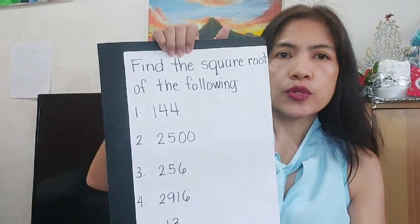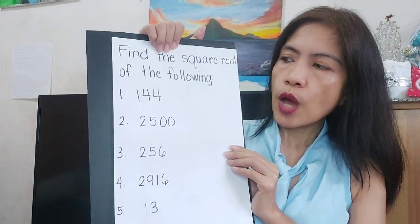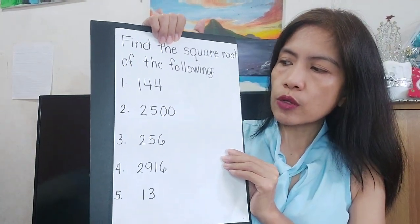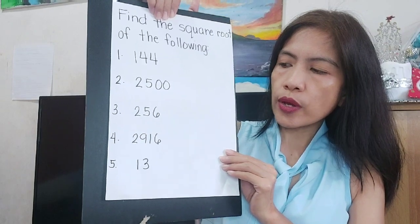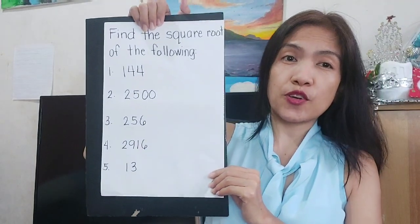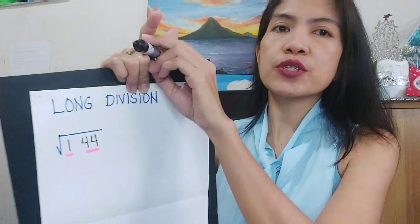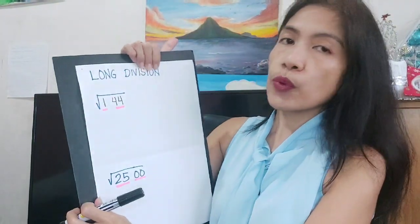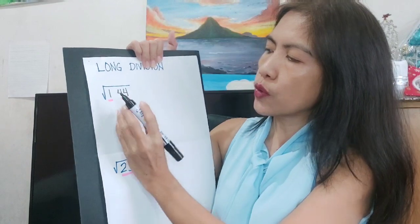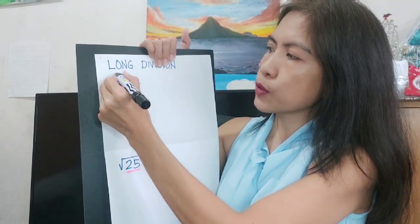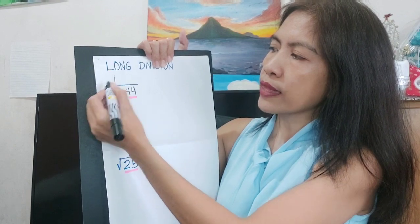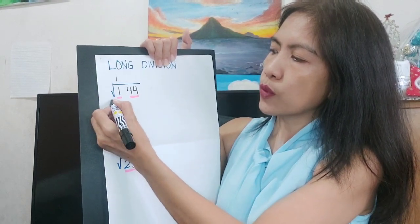Let's go to square roots and how to find them. Find the square root of 144 using long division. First, group the digits into pairs: 1 and 44. The square root of 1 is 1, so we put 1 on top. 1 times 1 is 1. 1 minus 1 is 0. Bring down 44.